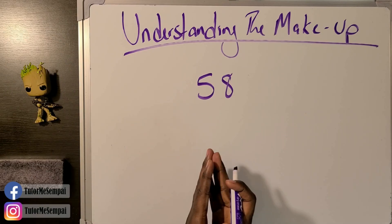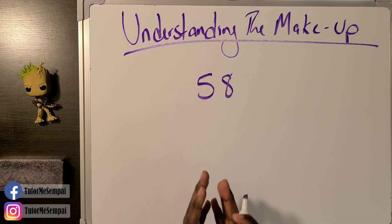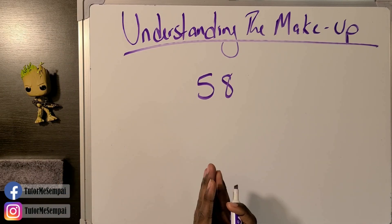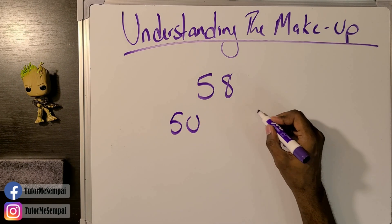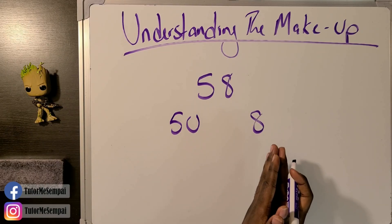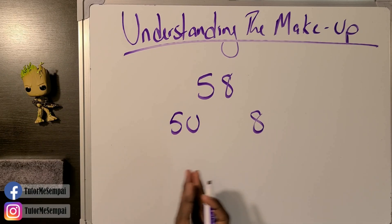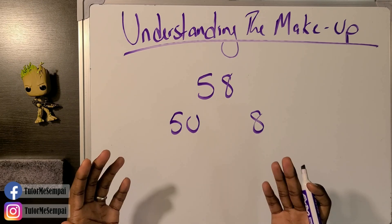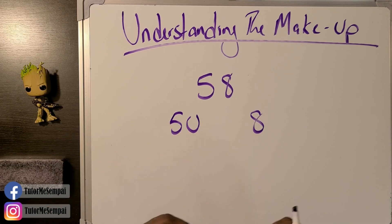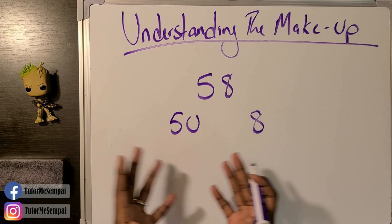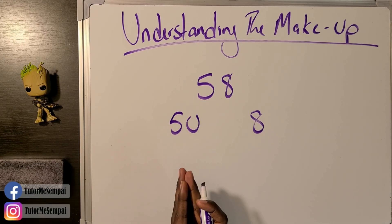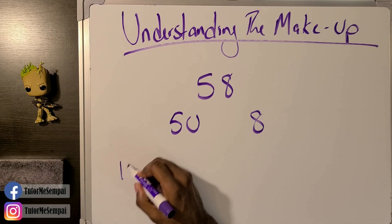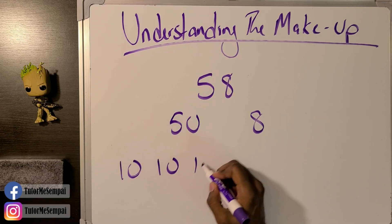How about a slightly bigger number — 58? We could do 58 ones, but that's pretty inefficient. Instead, let's break this into expanded form: 50 and 8. We already said 8 represents eight ones. 50 can also represent 50 ones, but that's inefficient — so how many tens can we break this into? This is going to be five tens.